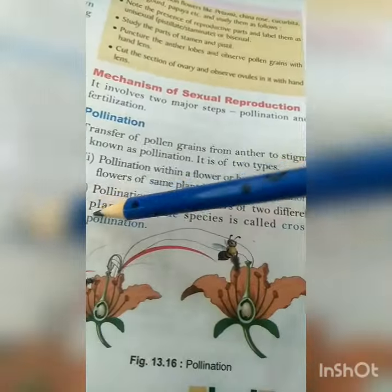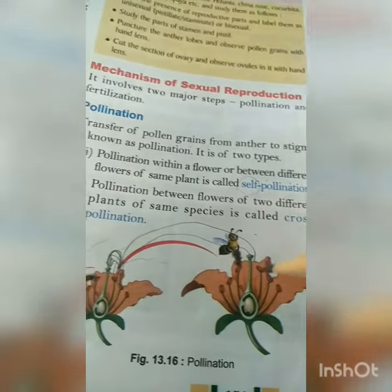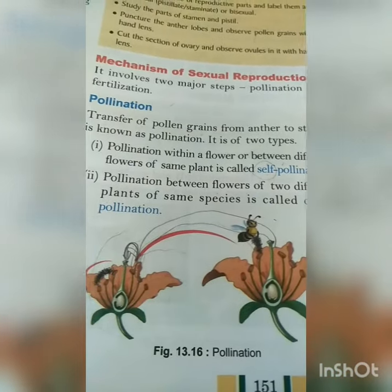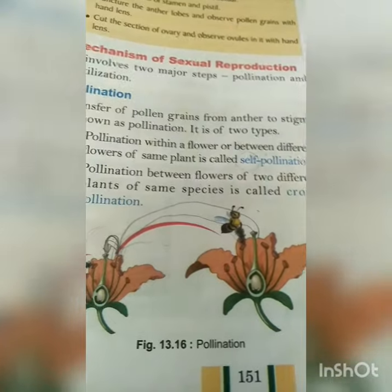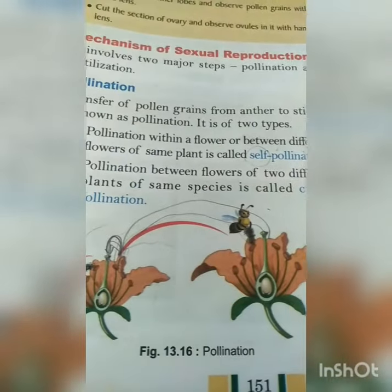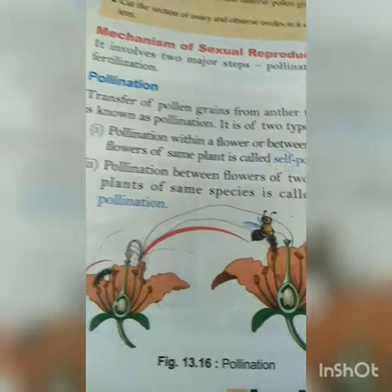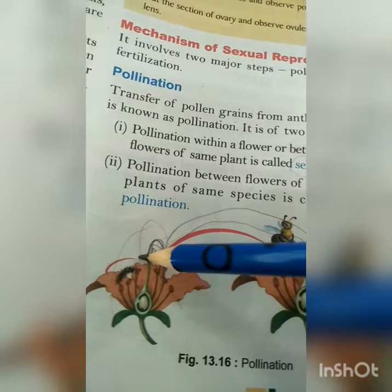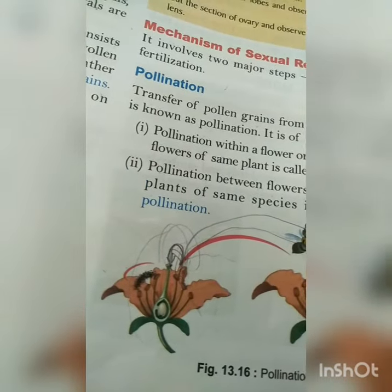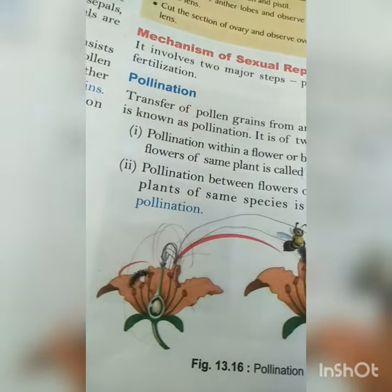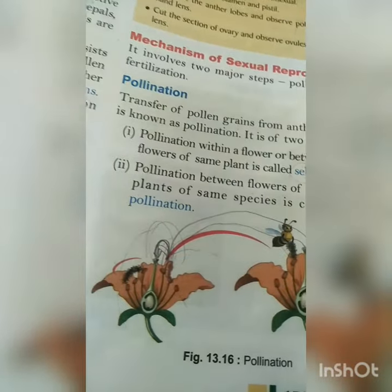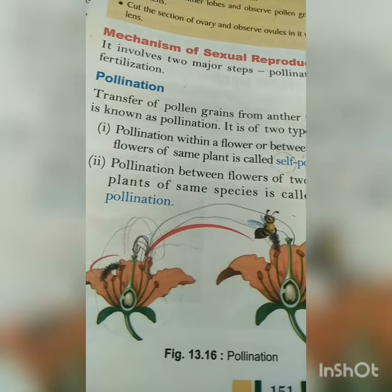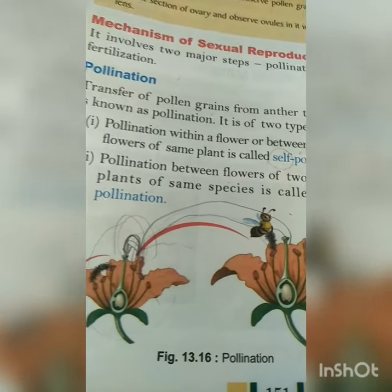Pollination between flowers of two different plants of the same species is known as cross-pollination. We can take the example of China rose to understand these types.